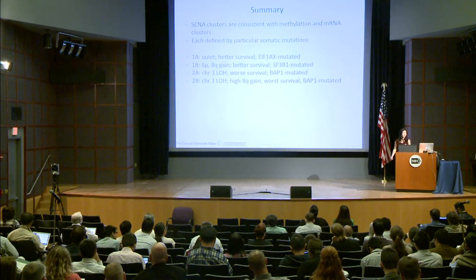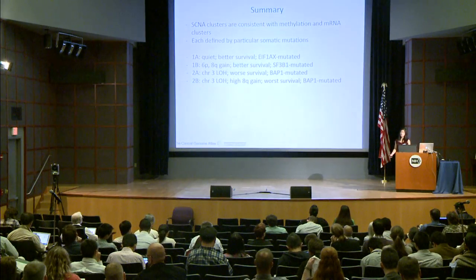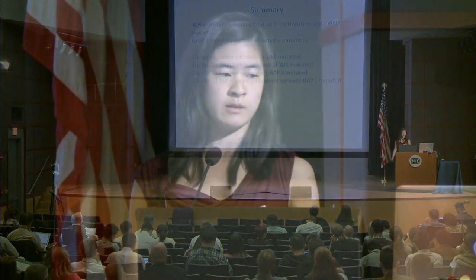Copy number subtype 1 and 2 look extremely different across multiple platforms, including methylation and messenger RNA. Chromosome 3 loss of heterozygosity is highly predictive of metastasis and worse overall survival. Perhaps in the clinic, copy number subtype 1 and subtype 2 patients could be treated differently. Going forward, this AWG will integrate all platforms into one cohesive story about uveal melanoma that hopefully will impact patient care in the future.